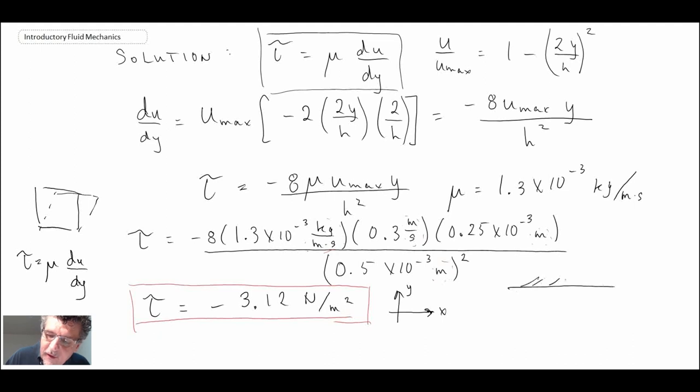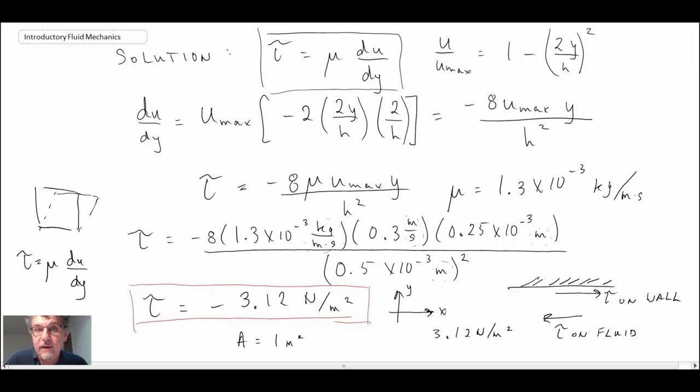If we sketch this out, the shear stress on the fluid is in the negative x direction. Just like in statics, you draw a picture showing the direction. You would write 3.12 newtons per meter squared. You could assign area as being unit area, or one meter squared. Your answer would be 3.12 newtons on the upper wall in the positive x direction.